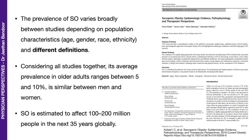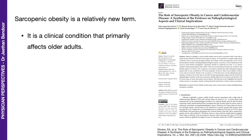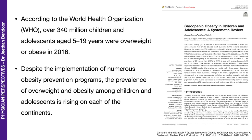Sarcopenic obesity is estimated to affect 100 to 200 million people in the next 35 years, yet we still consider it a relatively new term and a clinical condition that primarily affects older adults.